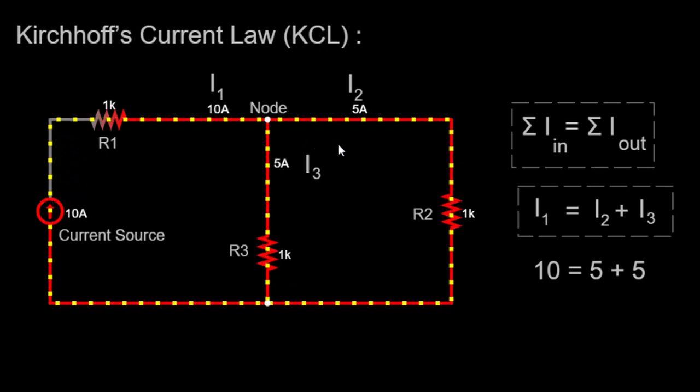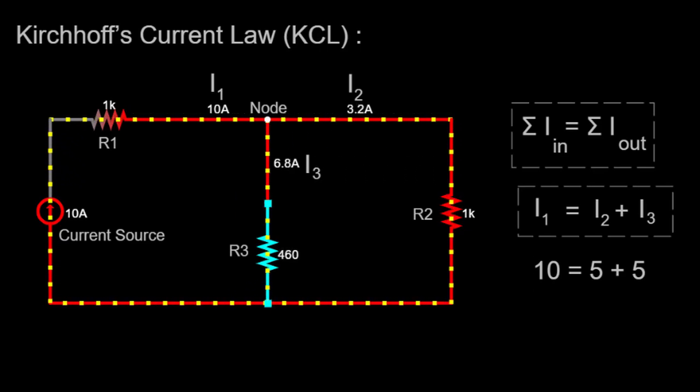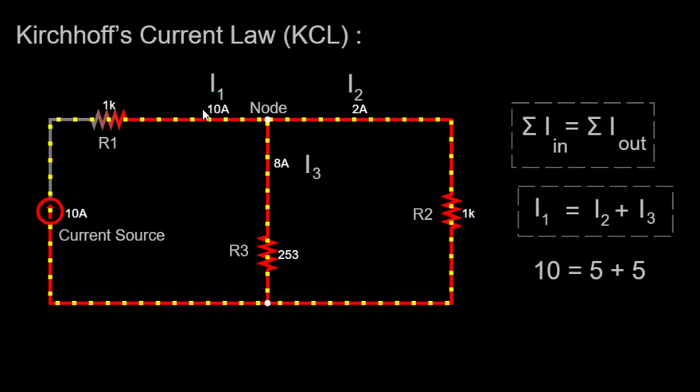To demonstrate this, we can gradually vary the resistance values of R2 and R3 using the circuit simulator. As we change the resistances, we observe that the sum of currents I2 and I3 always remains equal to I1. This validates Kirchhoff's Current Law, as the total current entering the node remains equal to the total current exiting the node.